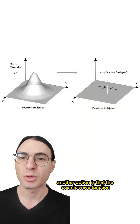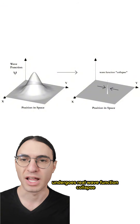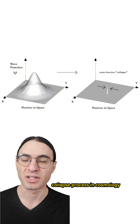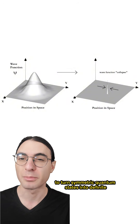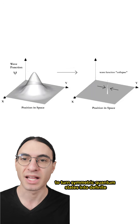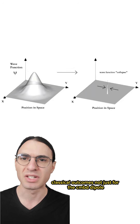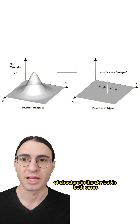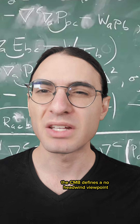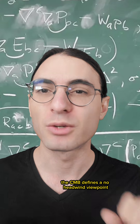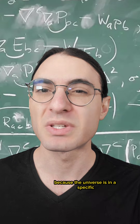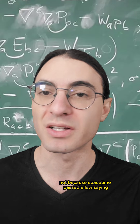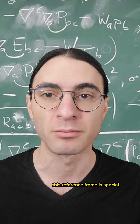Another option is that the cosmic wave function undergoes real wave function collapse. Some people argue that you need an objective collapse process in cosmology to turn symmetric quantum states into definite classical outcomes — not just for the CMB dipole, but for any particular realization of structure in the sky. But in both cases, the CMB defines a no-headwind viewpoint because the universe is in a specific macroscopic state, not because spacetime passed a law saying this reference frame is special.